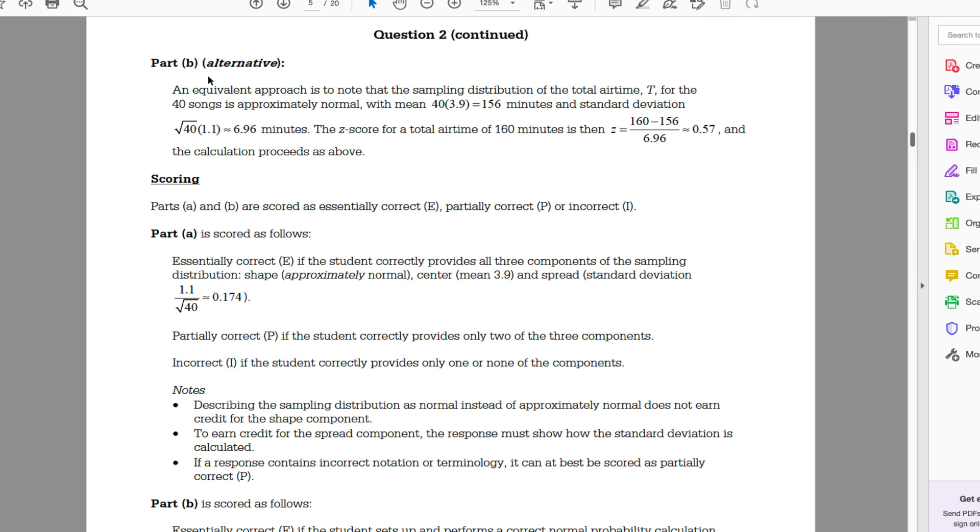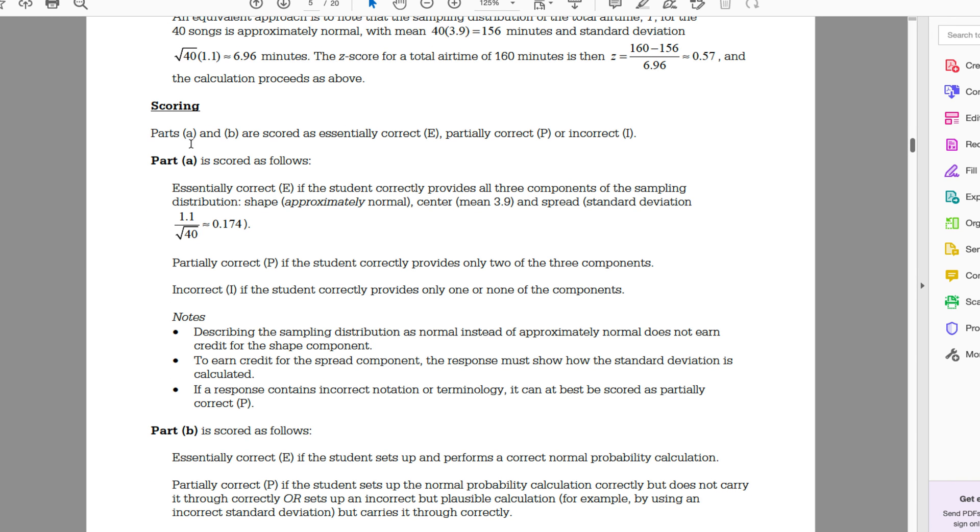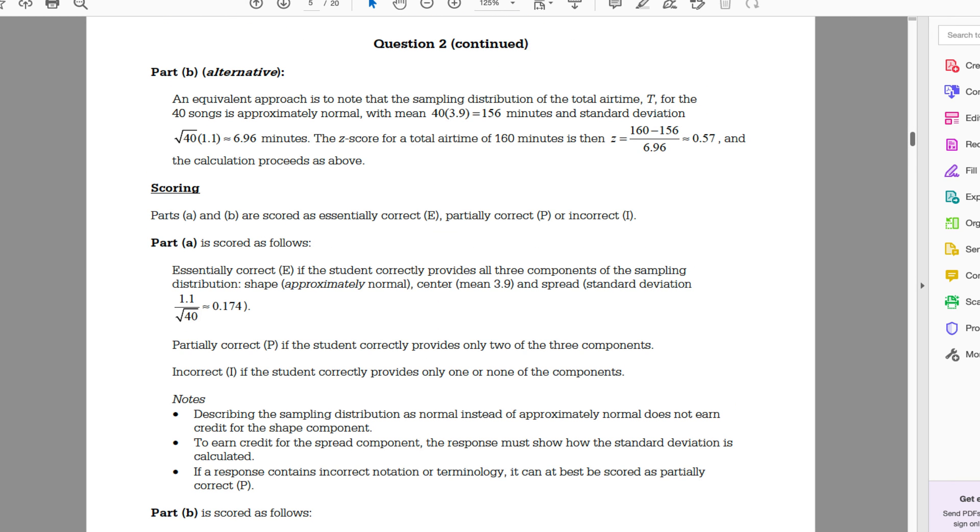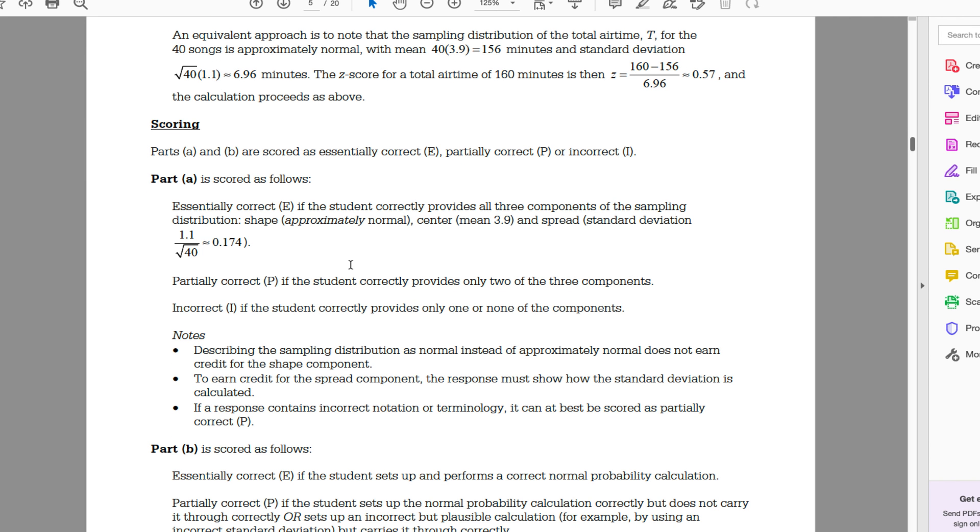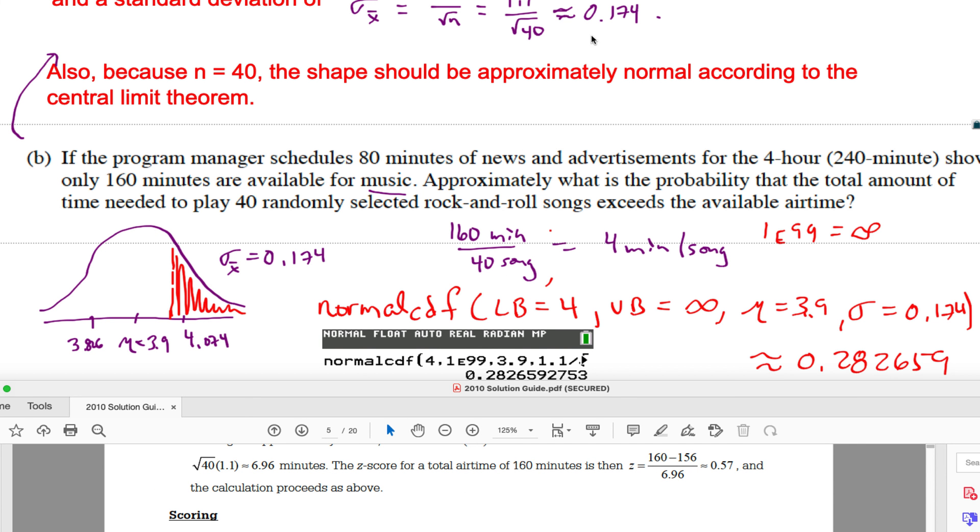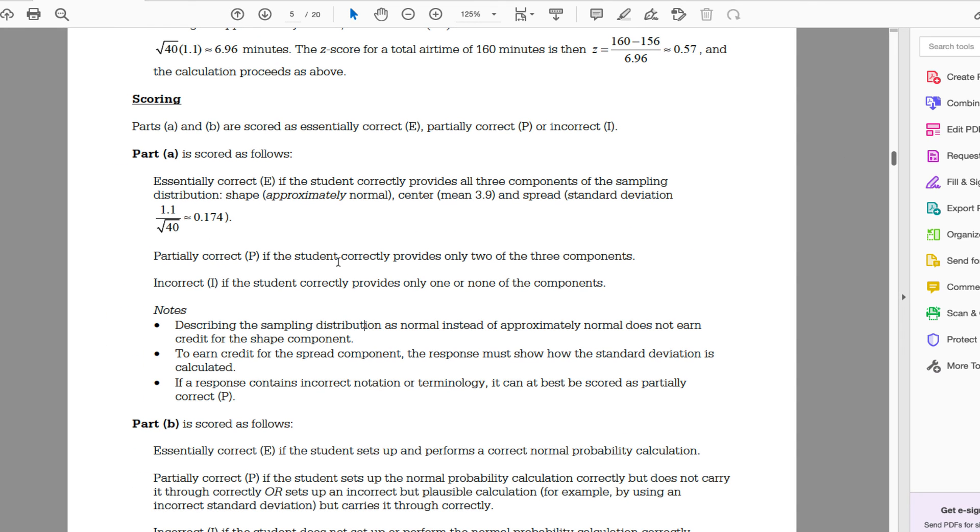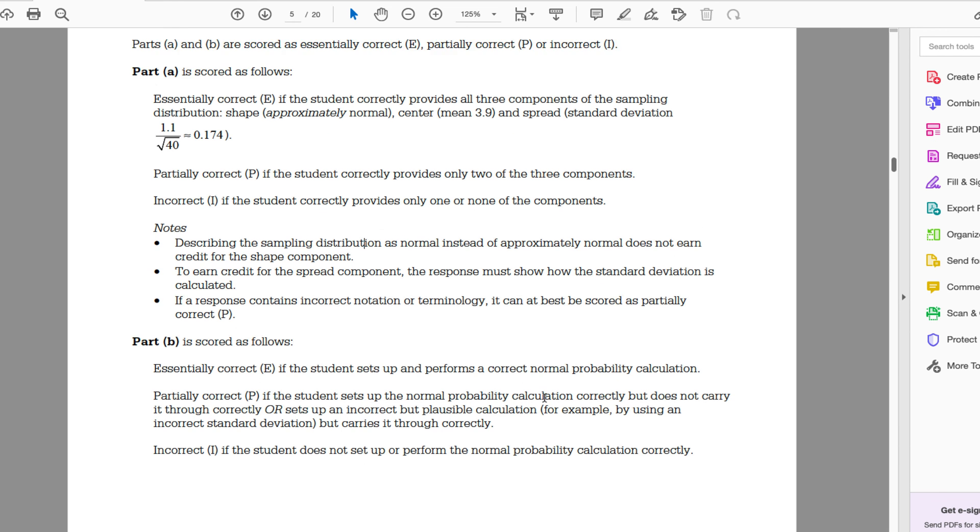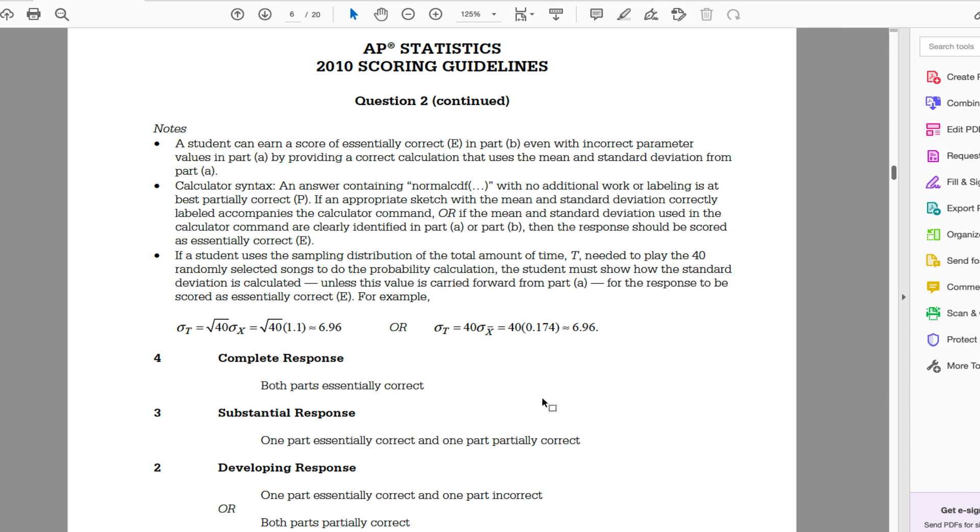Now I'm going to pull up the scoring guideline for this question and some things you should be aware of. Here are the notes: describing the sampling distribution as normal instead of approximately normal does not earn credit for the shape component. So it's really important that you say approximately normal. To earn credit for the spread, the response must show how the standard deviation is calculated. If you just put the answer down and don't show where the numbers come from, you will not get credit. If the response contains incorrect notation or terminology, it's at best scored as partial.